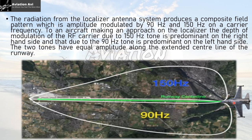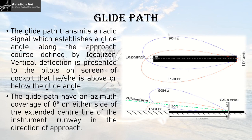If the aircraft is coming on the correct approach path but drifts too far to the right, it will intersect the 150 Hz frequency, and the input given to the pilot is to shift the aircraft left to realign with the correct approach path. Similarly, if the aircraft comes a bit too far left with respect to the runway center line, the 90 Hz input will indicate a correction to the right.